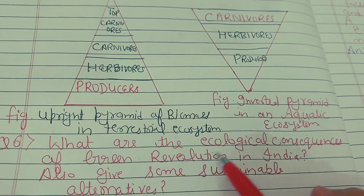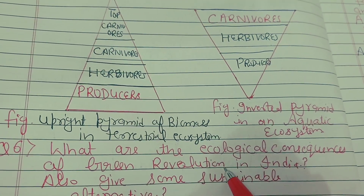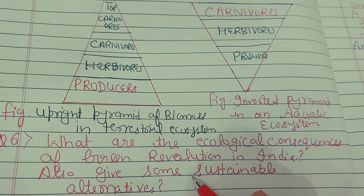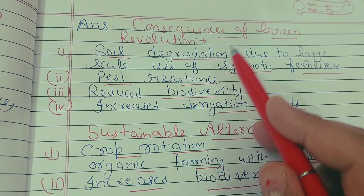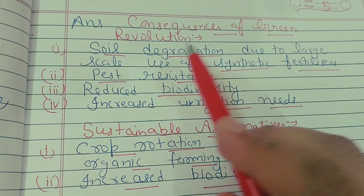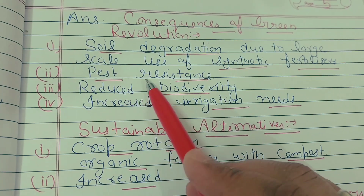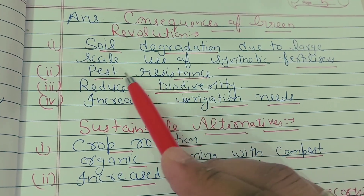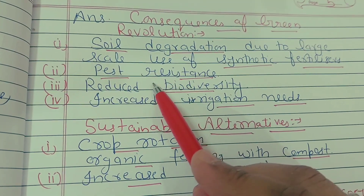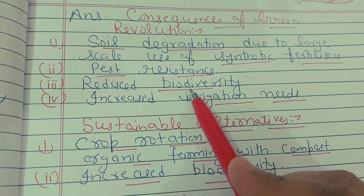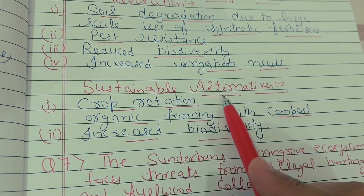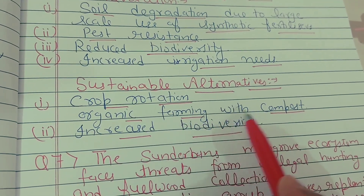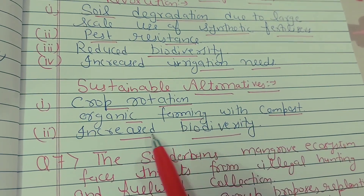Question number six: what are the ecological consequences of the Green Revolution in India? The consequences were: soil degradation due to increased use of synthetic fertilizers; pest resistance, similar to antibiotic resistance; reduced biodiversity; and increased irrigation need. Sustainable alternatives include crop rotation, organic farming with compost, and increasing biodiversity to maintain ecological balance.